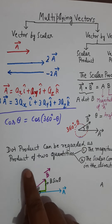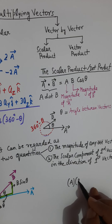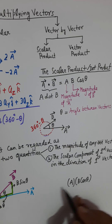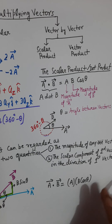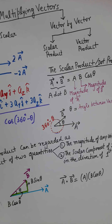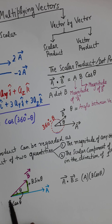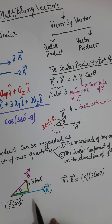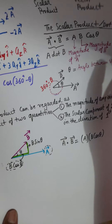The dot product can be regarded as: magnitude of A (first vector) multiplied by B cosine theta (scalar component of B in direction of A). So A dot B equals A times B cosine theta, which confirms our original definition.